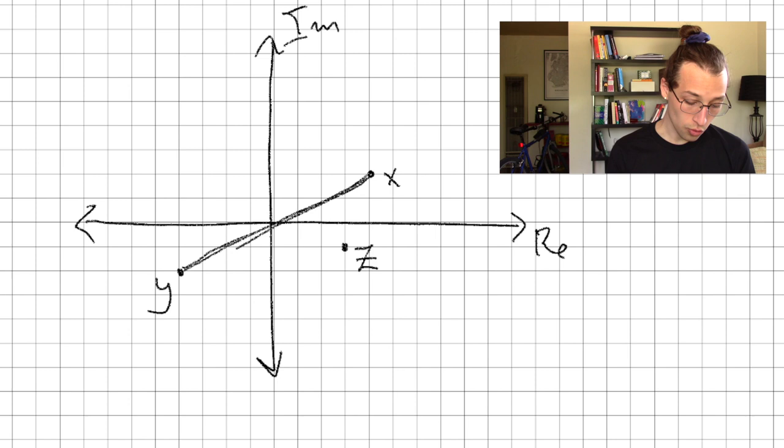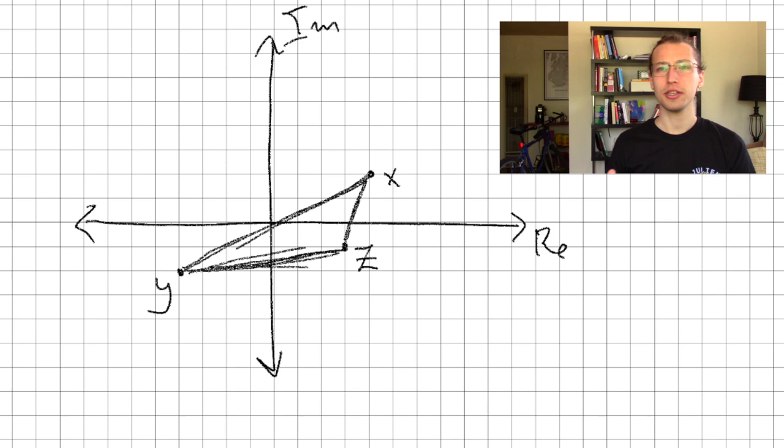Which makes sense. We can see that these two distances from x to z and z to y put together, lined up end to end, would definitely be longer than the distance from x to y. What we're really just saying with the triangle inequality is that the sum of two sides of a triangle is longer than the third side.